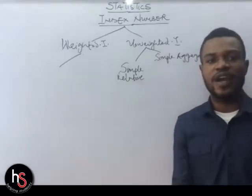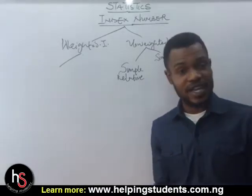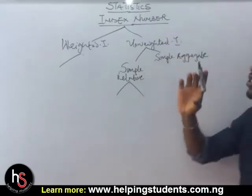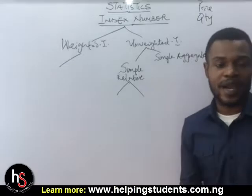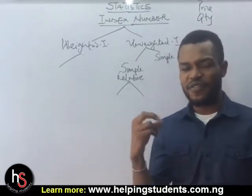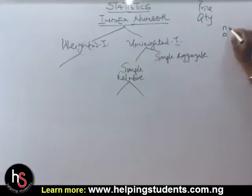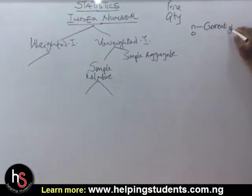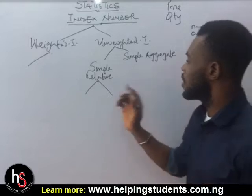The little challenge students have under this topic is deriving the formulas and knowing which formula to use at the right time. Under the simple relative, remember index number talks about price and quantity. There is an alphabetical notation added to every figure: N and O. N refers to the current year, and O refers to the base year — just like 'old' or 'previous.'